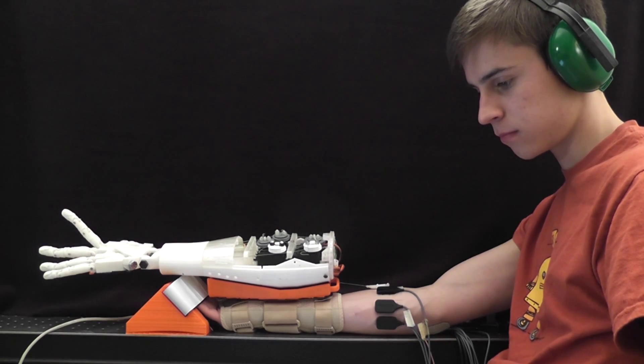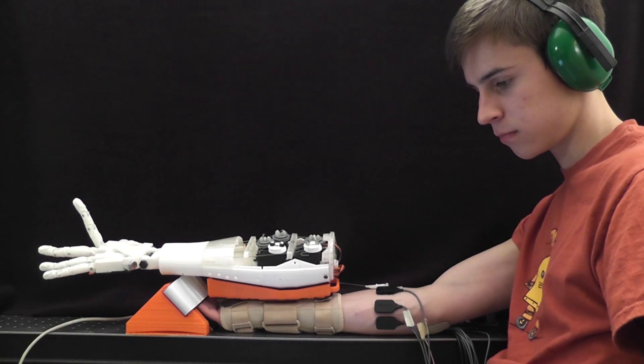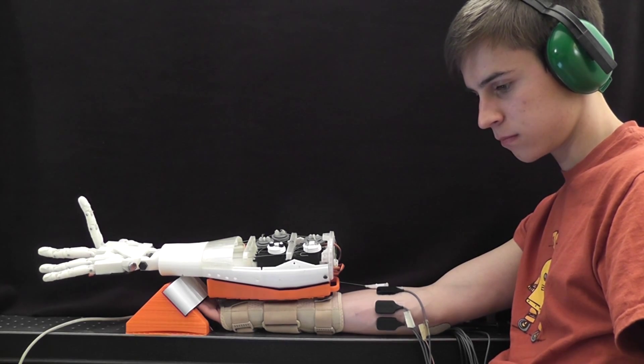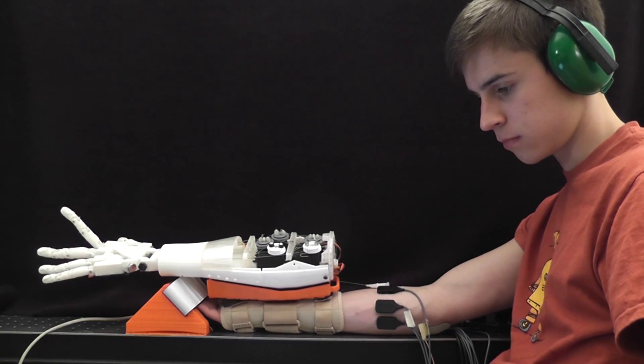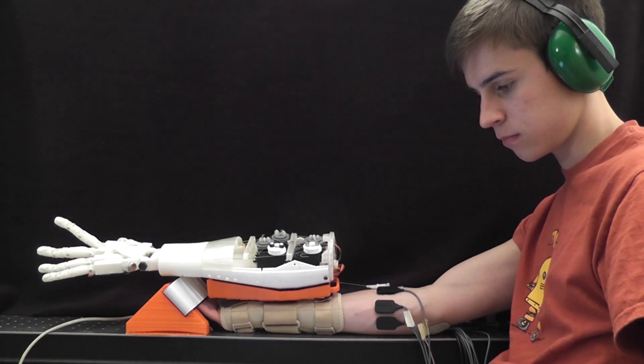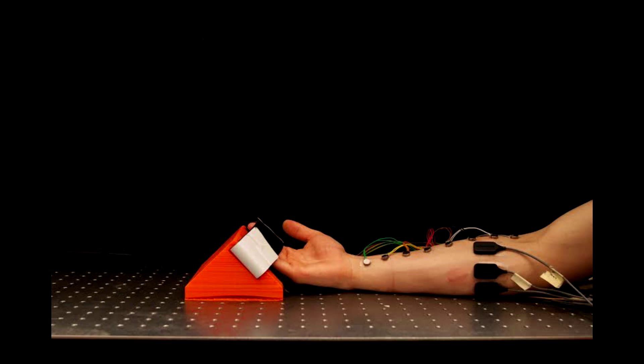Our first experiment involved controlling the angle of a virtual finger to match a target angle, while giving no positional feedback, feedback using our skin stretch device, or feedback using a vibrotactile array. For the vibrotactile array, a specific motor vibrated when the finger angle entered a particular range.